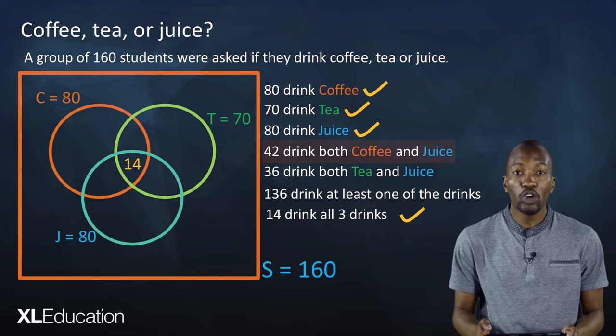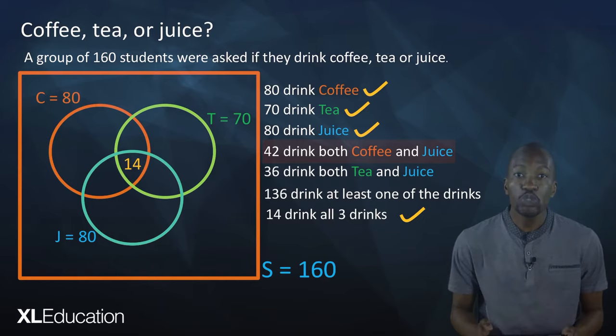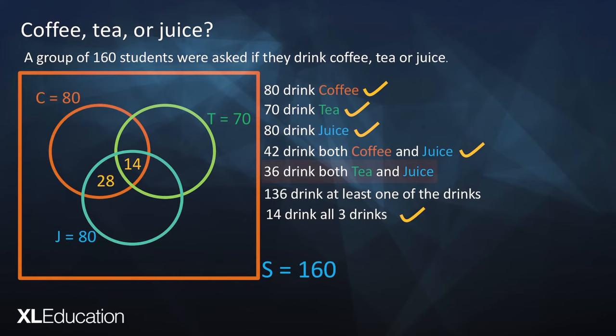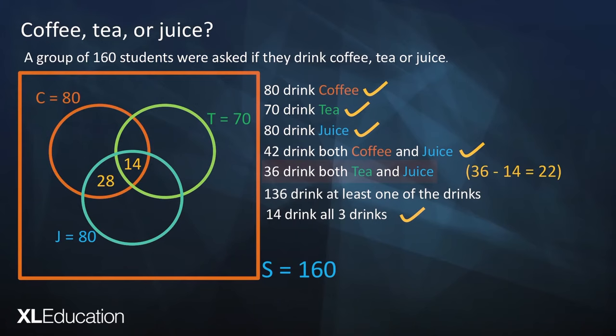42 drink both coffee and juice. This is the intersection of the coffee and juice circles, but we already have 14 there, so we say 42 minus 14, which gives us 28. Now 36 drink both tea and juice, so we do the same thing: 36 minus 14 gives us 22.